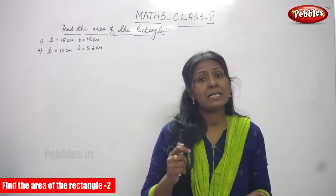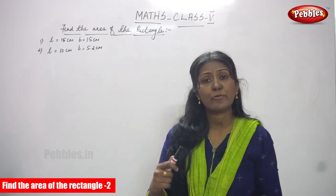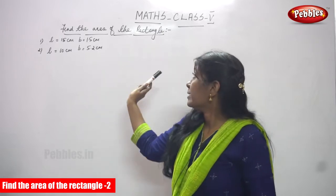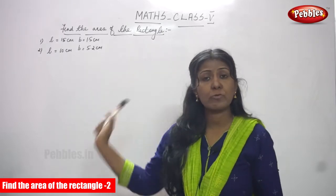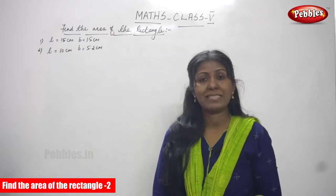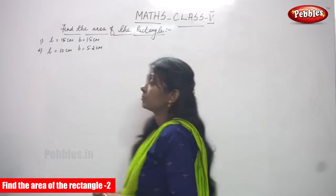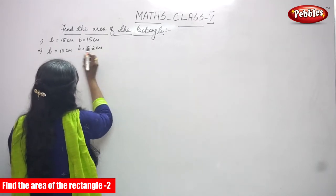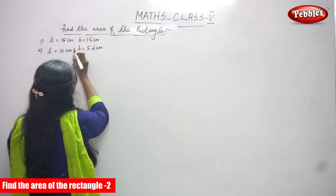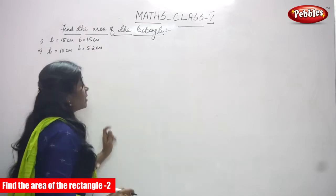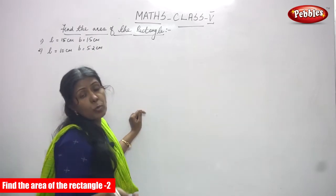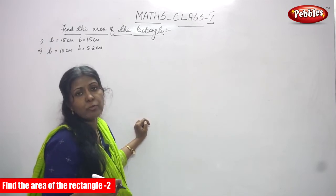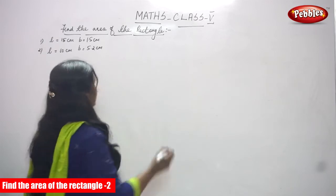Hi, welcome to Pebbles. In the last class we saw the area of the rectangle, so today we continue the same topic — finding the area of a rectangle with given values. The first problem: length L is equal to 15 centimeters and breadth is equal to 1.5 centimeters. It is in decimal, so one is a whole number and the other is a decimal number. We have to find the area of the rectangle.